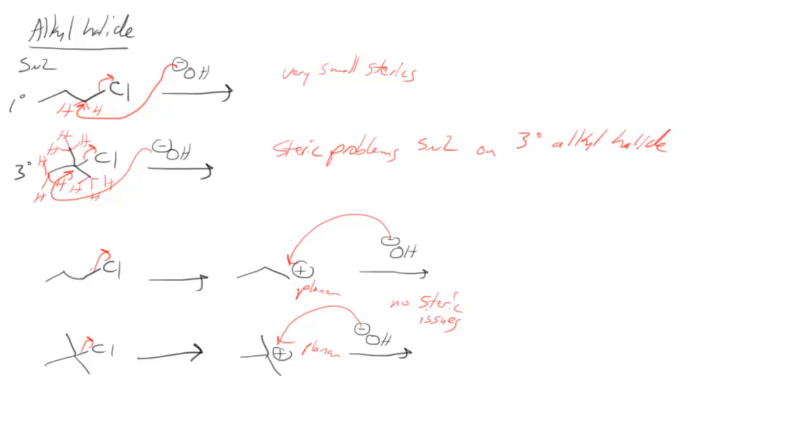So the difference here is actually that we make a primary carbocation in this case versus a tertiary carbocation. And carbocation stability says that tertiary is better than a secondary carbocation, which is more stable than a primary carbocation, which is more stable than a methyl carbocation.